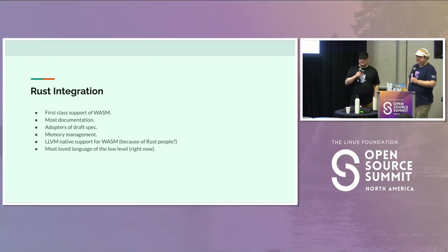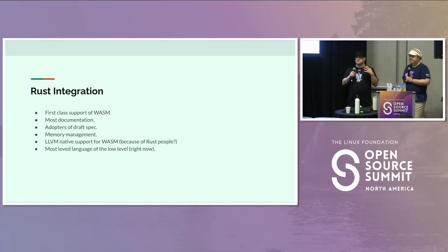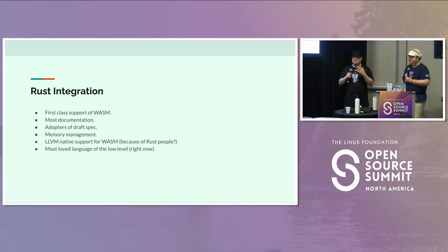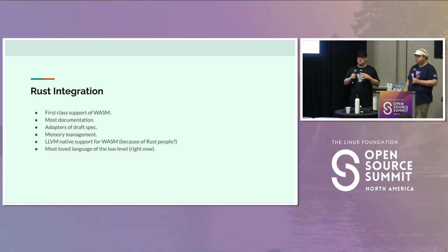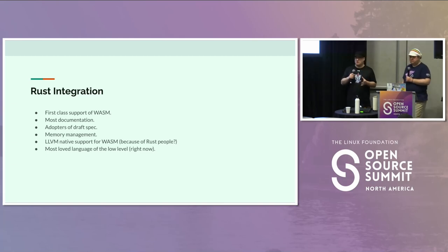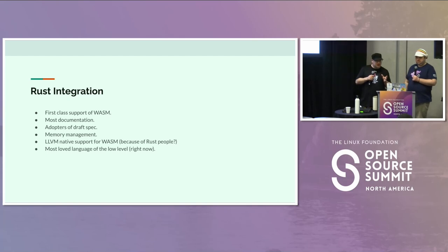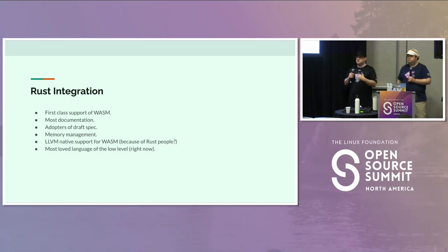Speaking of Rust integration — a lot of Wasmtime and Wasmr integrations are primarily written in Rust. This is how Cloudflare and Fastly are doing their edge computing. If you are a Rust developer and have domain knowledge already, I believe you can start exploring right now how to use Wasmtime in your production workflow. Rust is one of the key places I'd look if you want early adoption of a draft spec — it's a first-class citizen for this work.